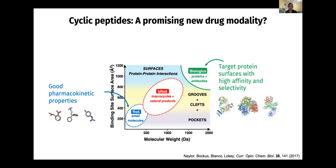This is because these proteins are so huge and protein in nature. So when you take them by mouth, they get chewed down by enzymes — they get treated as food. They also often do not cross the cell membrane, so you couldn't use them to target intracellular targets.